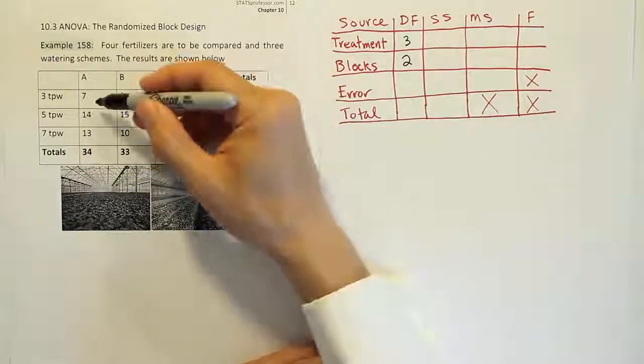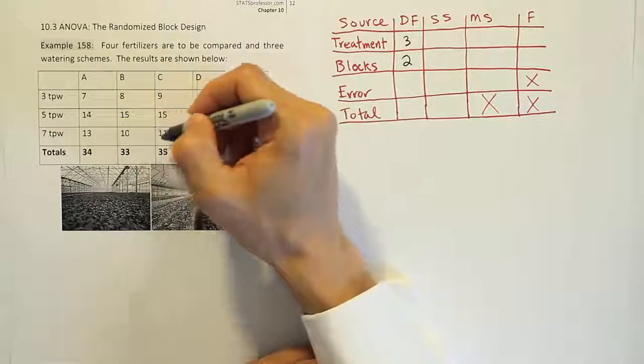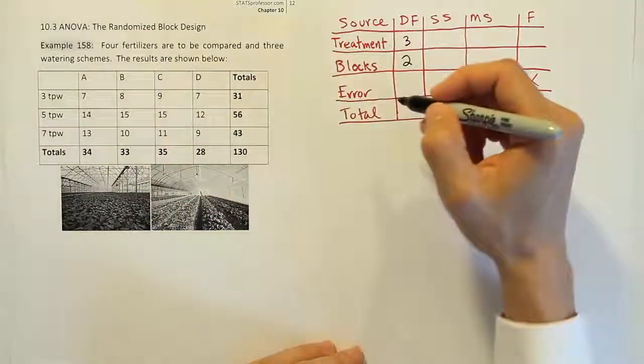The total degrees of freedom is basically 1, 2, 3, 4, 5, 6, 7, 8, 9, 10, 11, 12, minus 1, so 11, right?